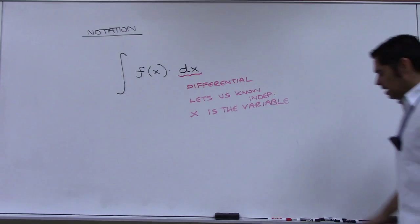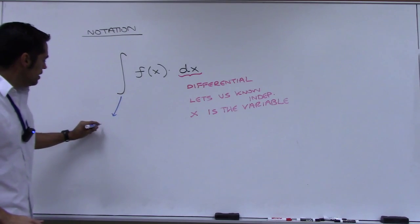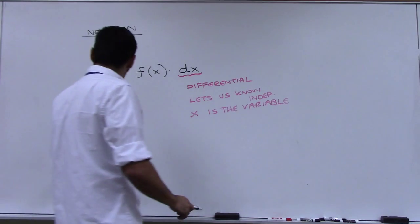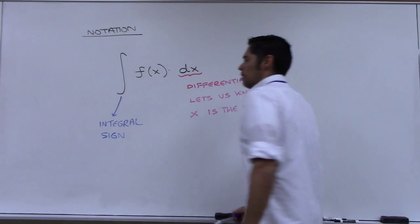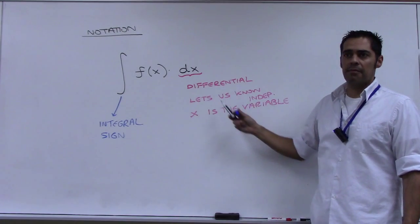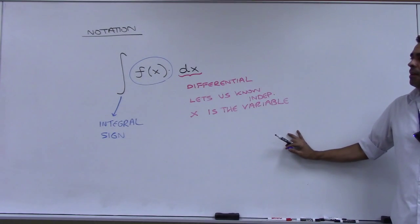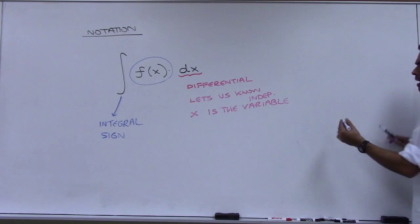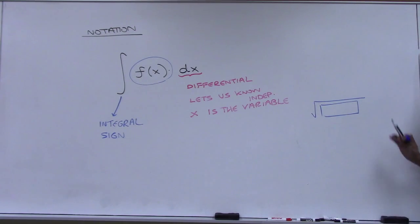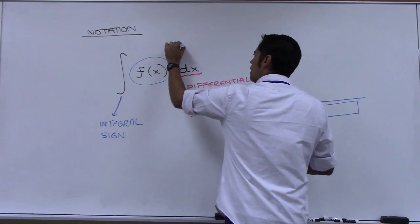This elongated symbol is called the integral sign. This is the differential, which keeps track of the variable. The function that we are trying to find the anti-derivative of is called something also. Do you remember when we had square roots, what we called the thing underneath? The radicand. This is called the integrand — it's the thing you're trying to find the anti-derivative of.